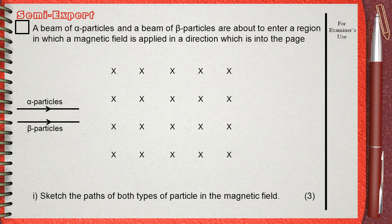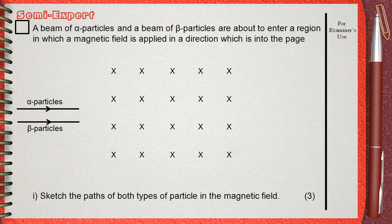This question is about the effect of the magnetic field on the motion of a charged particle. In this question, the positively charged alpha particles and the negatively charged beta particles. A beam of alpha particles and a beam of beta particles are about to enter a region in which a magnetic field is applied in a direction which is into the page.